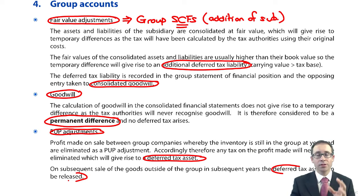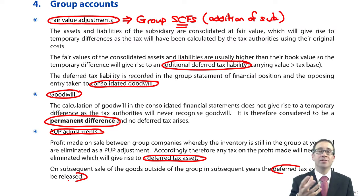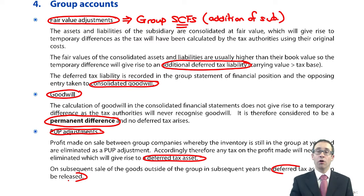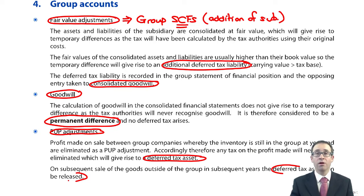The key one to understand and make sure you're happy with is the fair value adjustment. It arises on your group statement of cash flows question. The fundamentals are that we credit the deferred tax liability on the fair value adjustment, and the debit goes to your goodwill. Other than that, that's deferred tax done and dusted. We'll see plenty of it as we go through the group statement of cash flows questions, and there could be some bits to do with individual accounts within narrative parts of question two or question three.